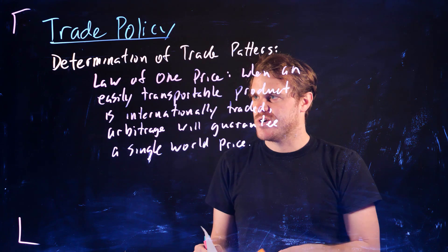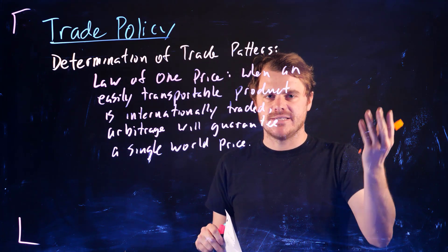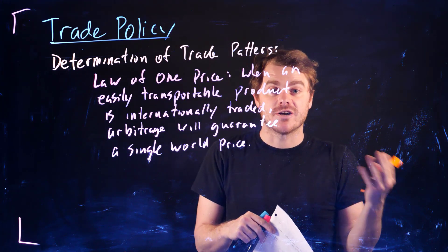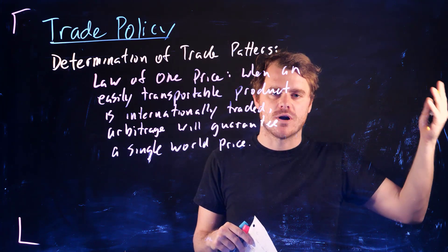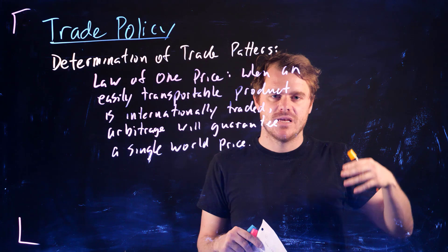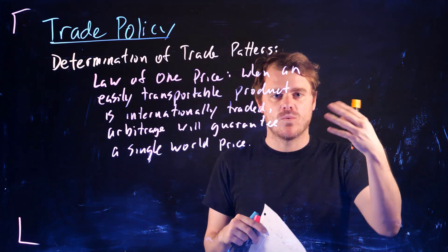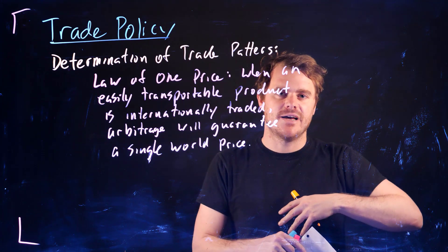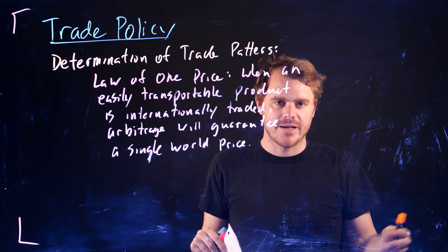And so what determines trade patterns is if your domestic price or your autarchy price is below or above this one world price. So when I say autarchy price, I mean the price if Canada, for instance, didn't trade with anybody.